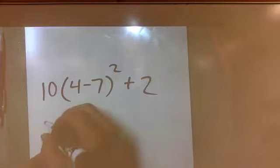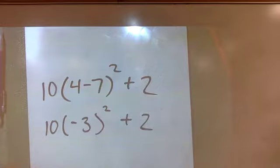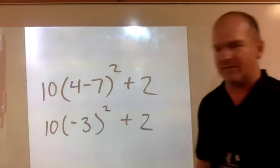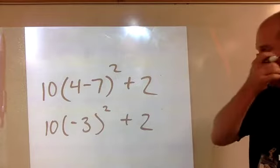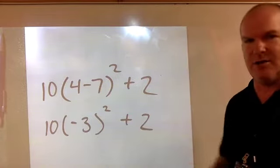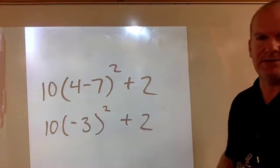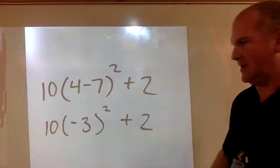So you would get 10 times negative 3 squared plus 2. Now you still might want to do 10 times negative 3 and come up with negative 30, but if you did that, 10 times 3 is multiplying - that's the M in PEMDAS. You forgot about the E in PEMDAS, the exponent. It all comes down to PEMDAS - you got to do the exponent before you multiply.